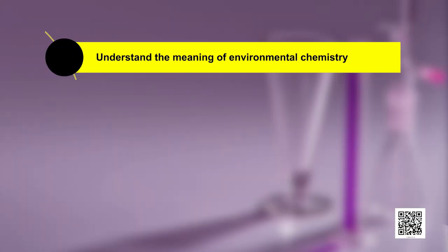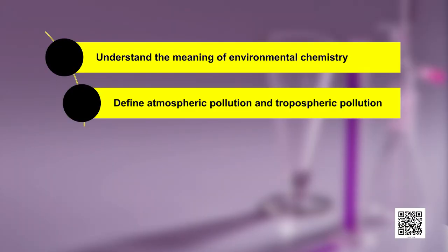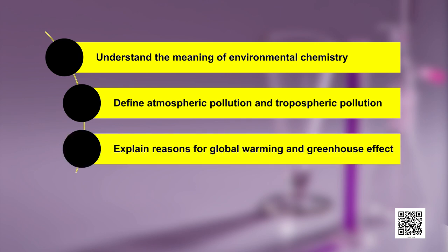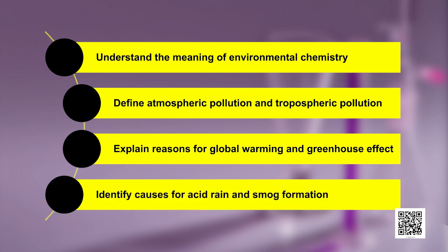In this chapter, we will understand the meaning of environmental chemistry, define atmospheric pollution and tropospheric pollution, explain reasons for global warming and greenhouse effect, and identify causes for acid rain and smog formation.